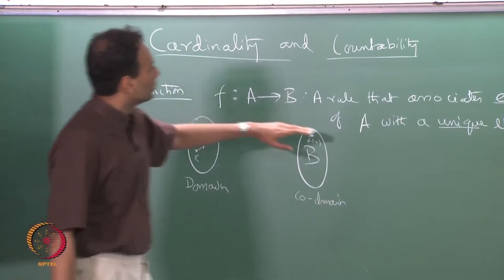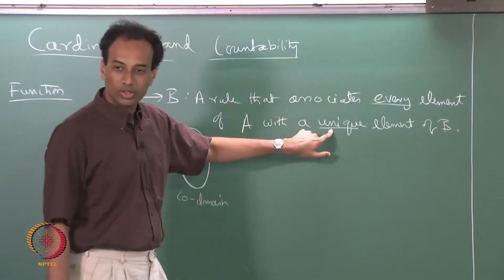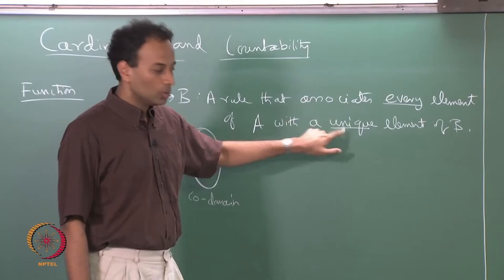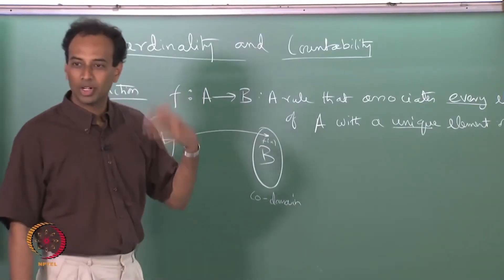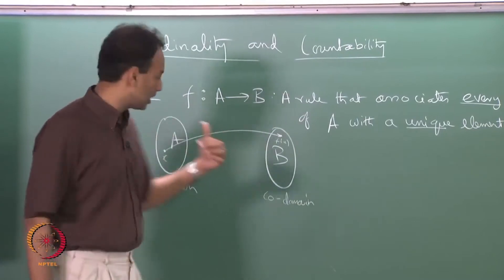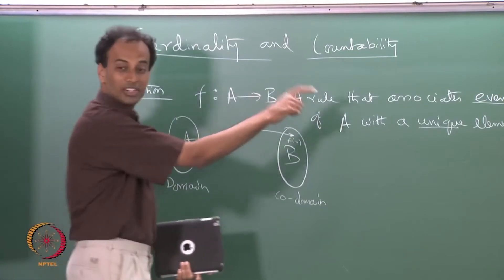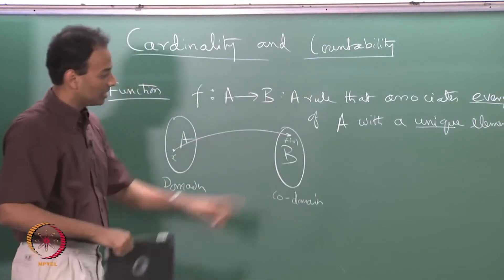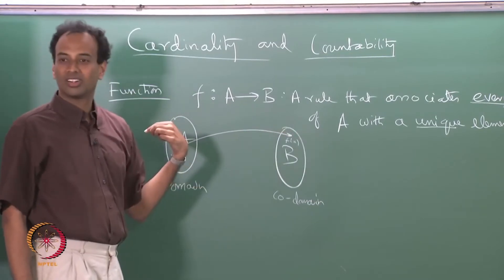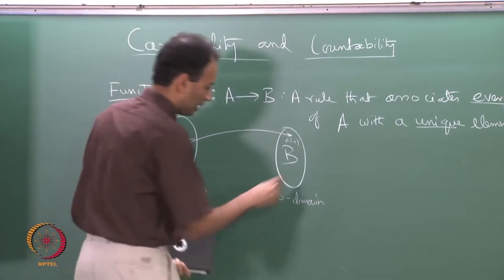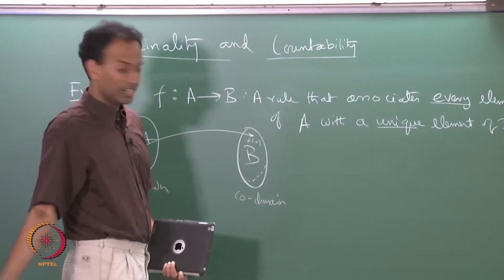The rule associates every element of A with a unique element of B, but there could be elements in B which are not covered — which may not be images of any element in A. Every element of A must be mapped, but some elements in B may not be images of anything in A.